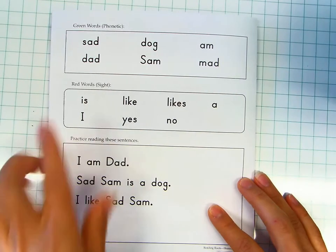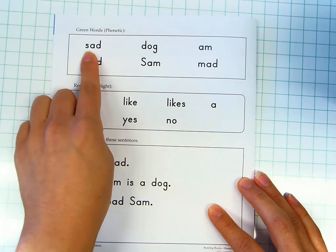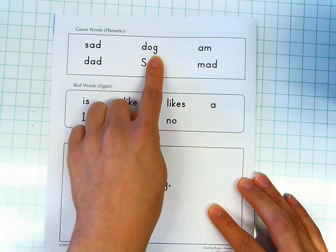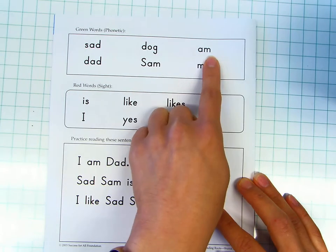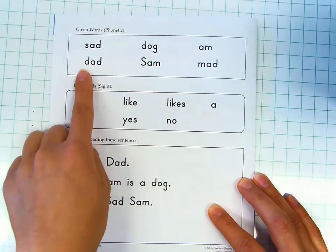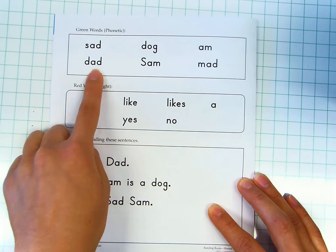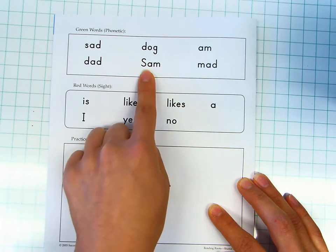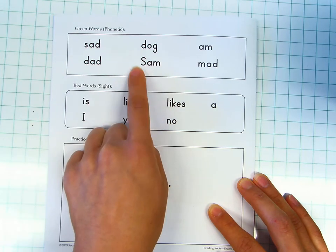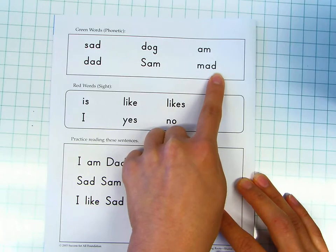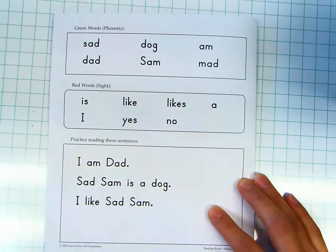Green words. Sad, sad. D-aw-g: dog. A-m: am. D-a-d: dad. T-aw-m: sam. M-aw-d: mad. Your turn.